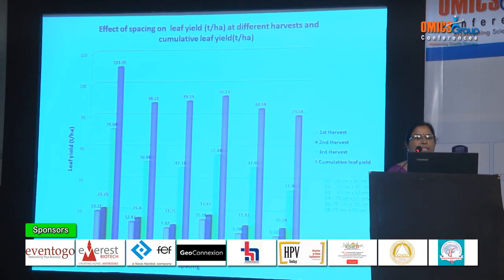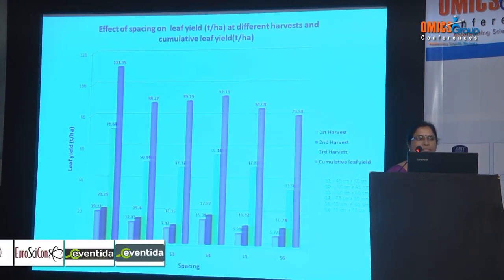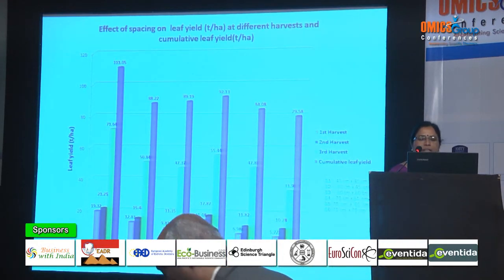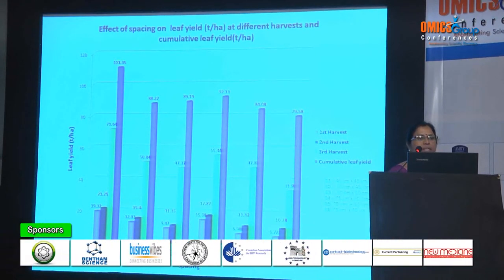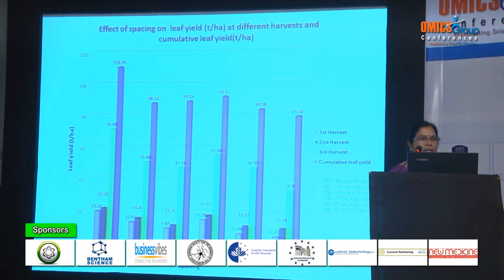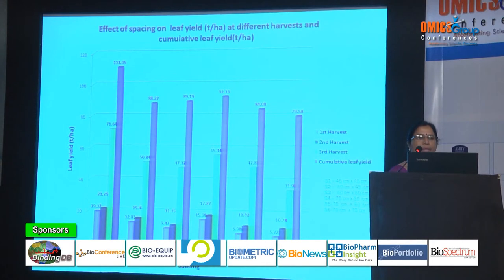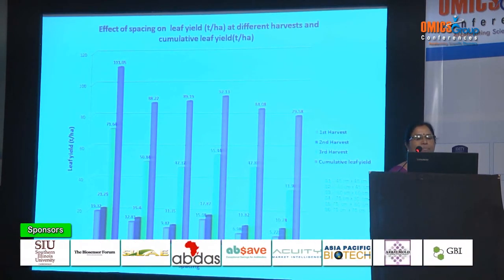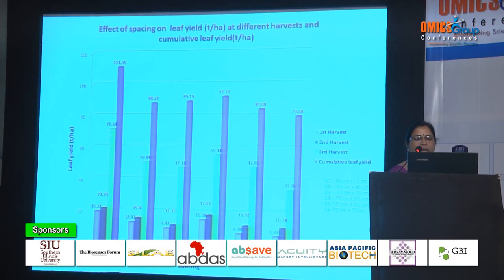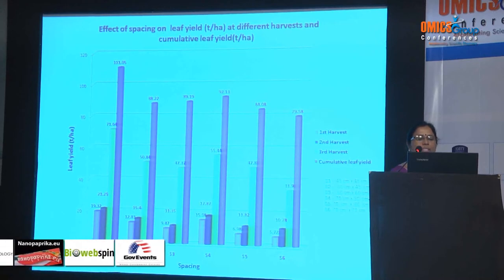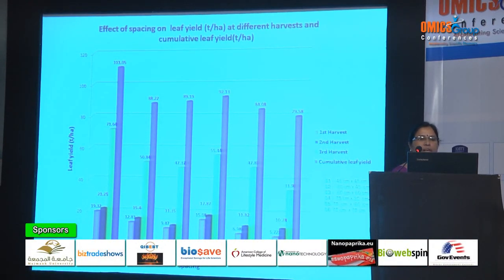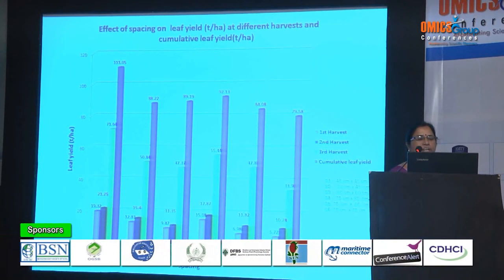This slide shows the effect of spacing on leaf yield at different harvests. The highest yield was recorded in S1 (45×45 cm) spacing due to the greater number of plants per unit area, even though average leaf weight is highest in S6. In the first harvest the average yield in S1 is 19.32 tons, in the second harvest 21.25 tons, and in the third harvest 71.64 tons per hectare. The cumulative yield is also highest in S1 at 111 tons per hectare.